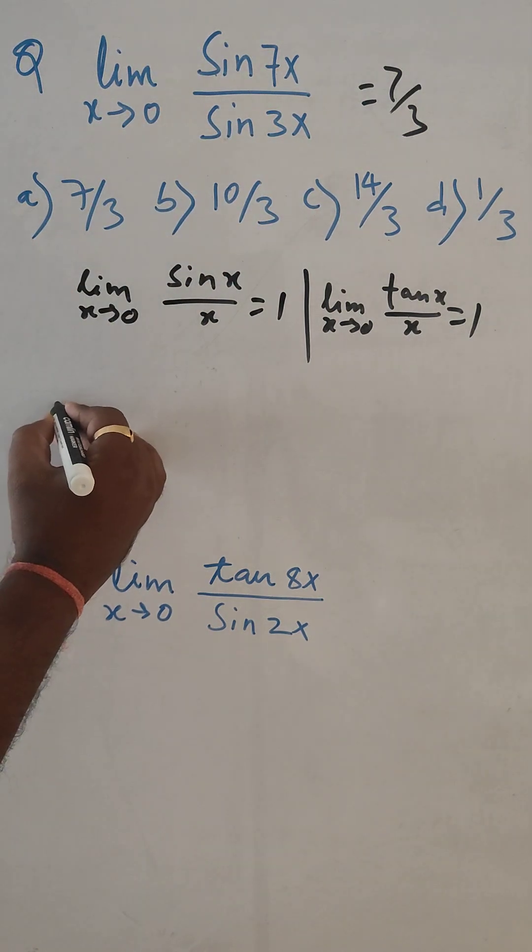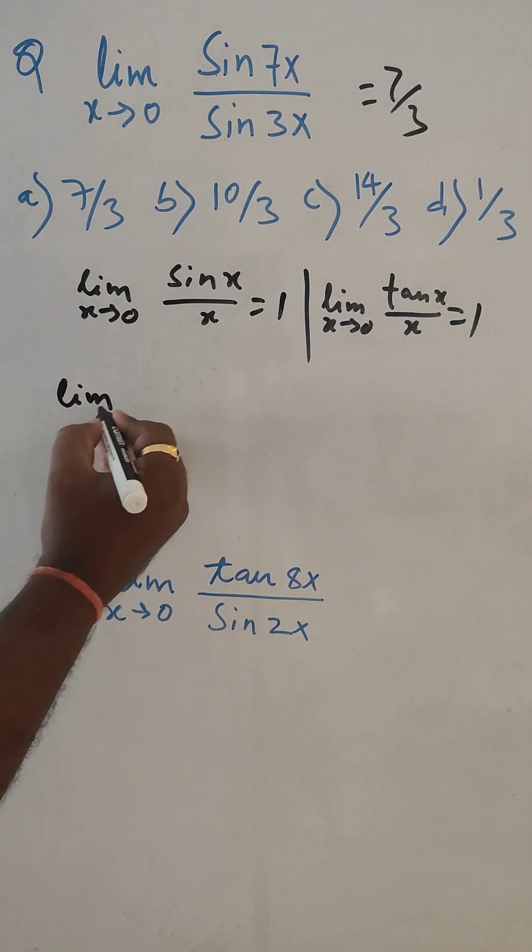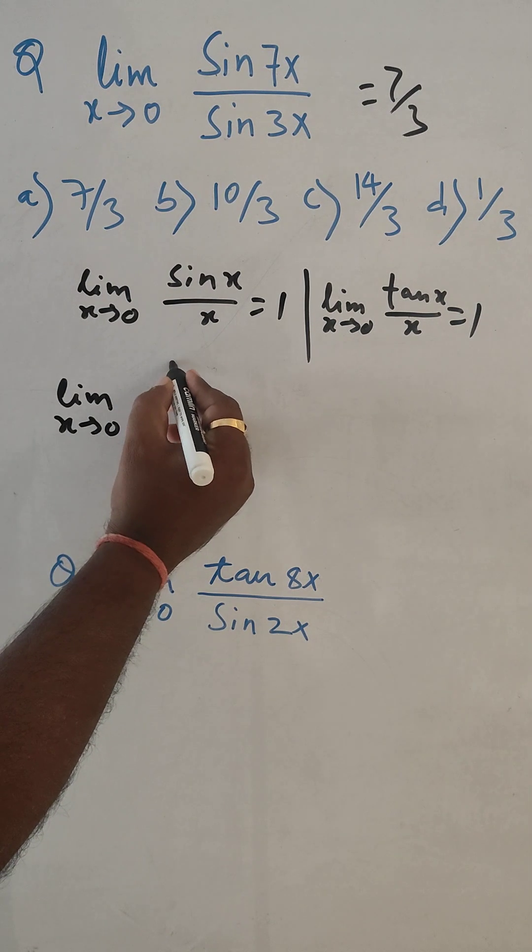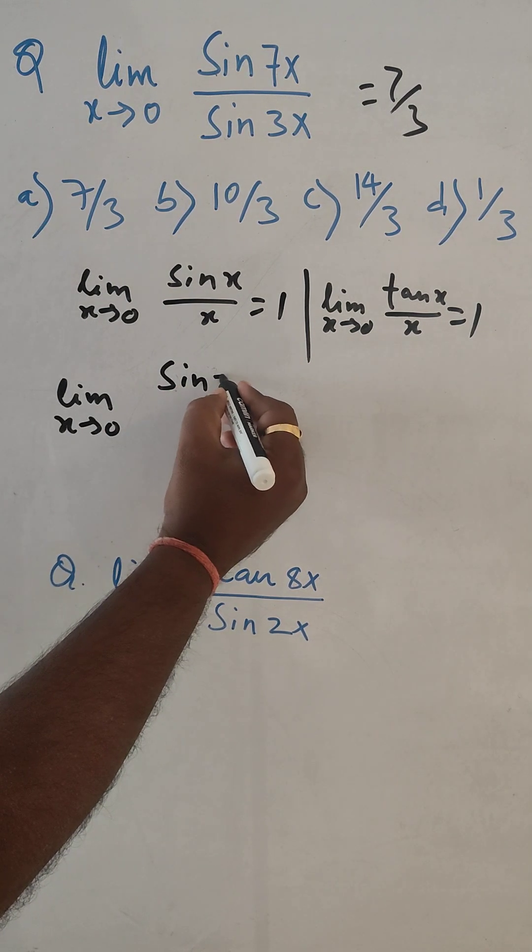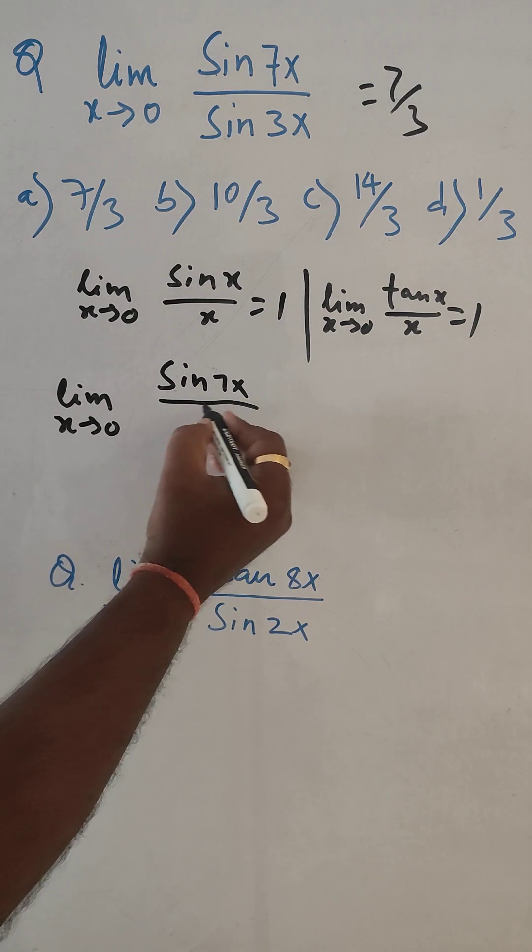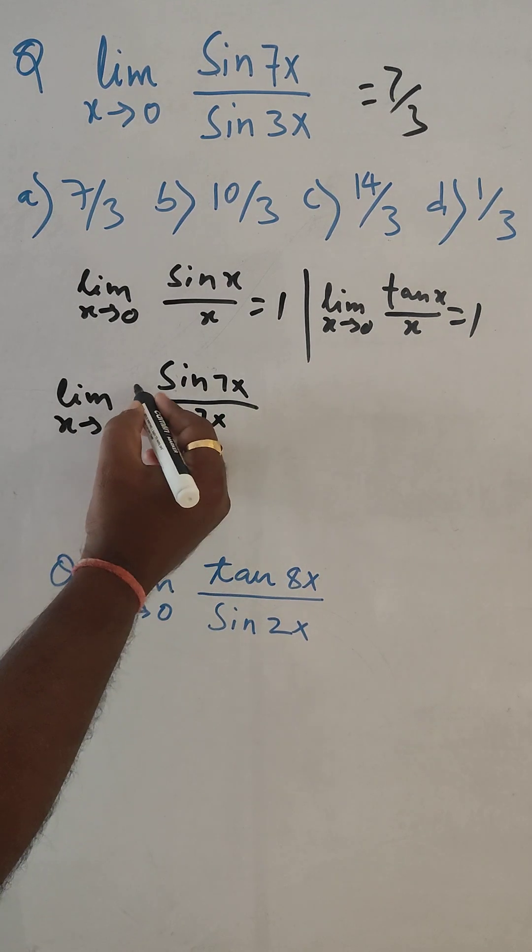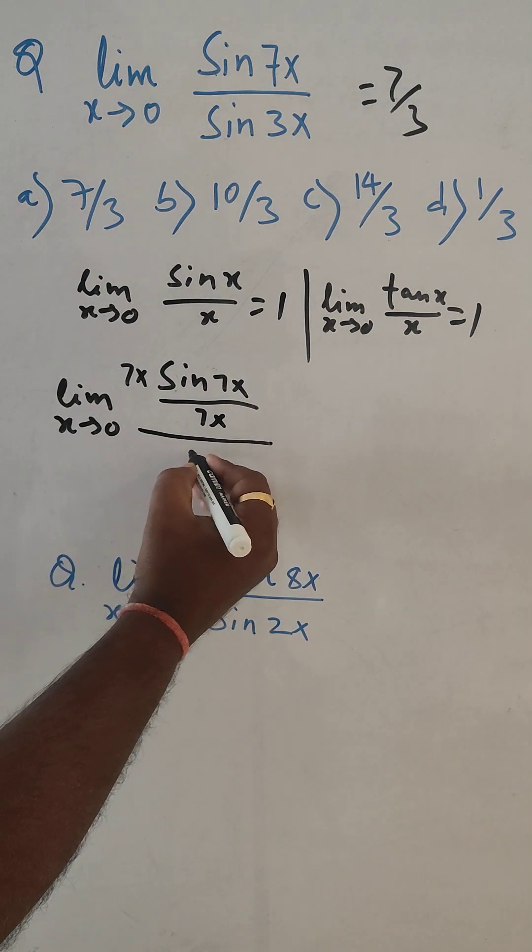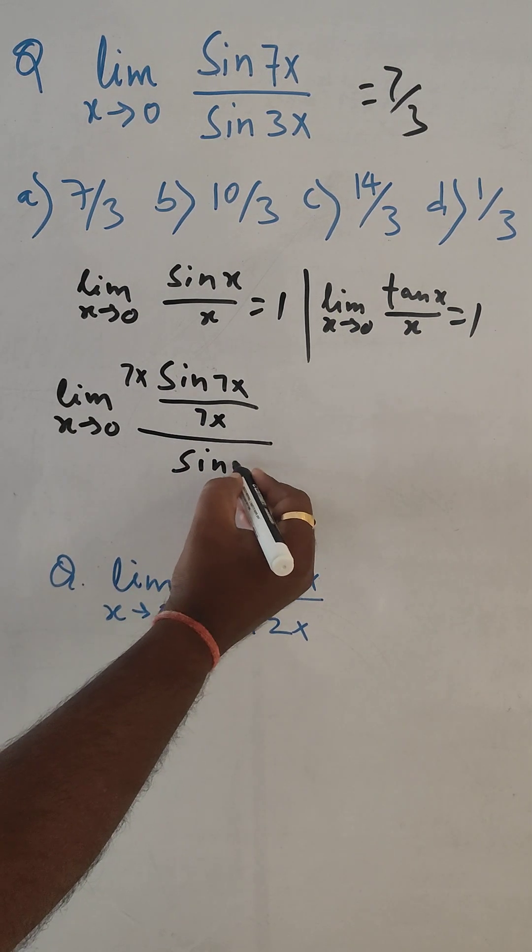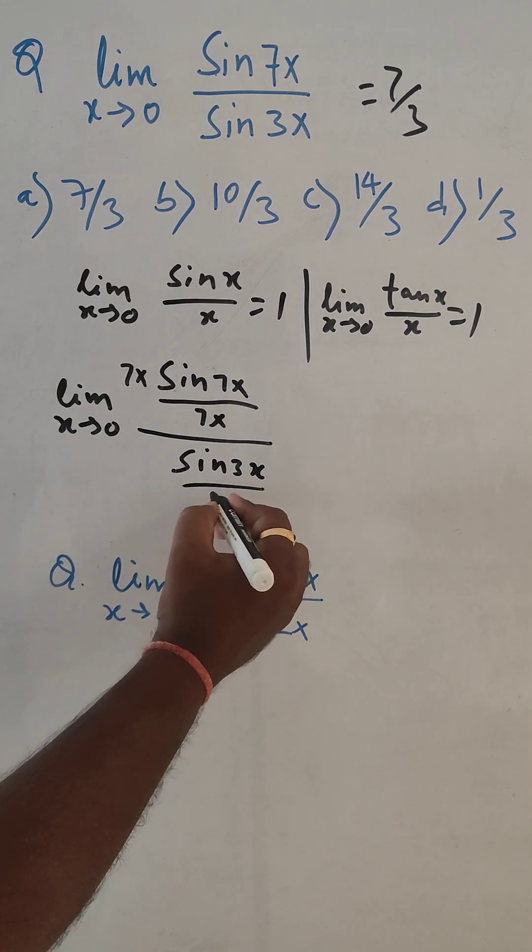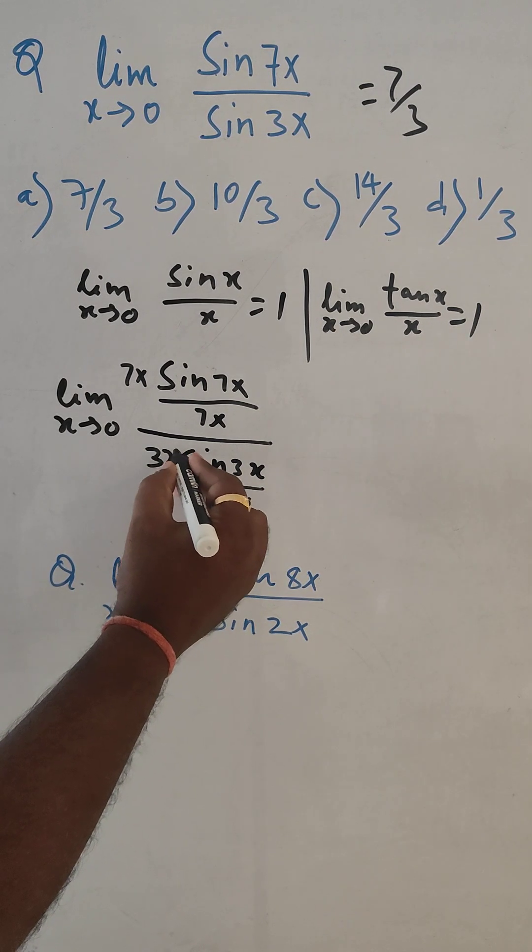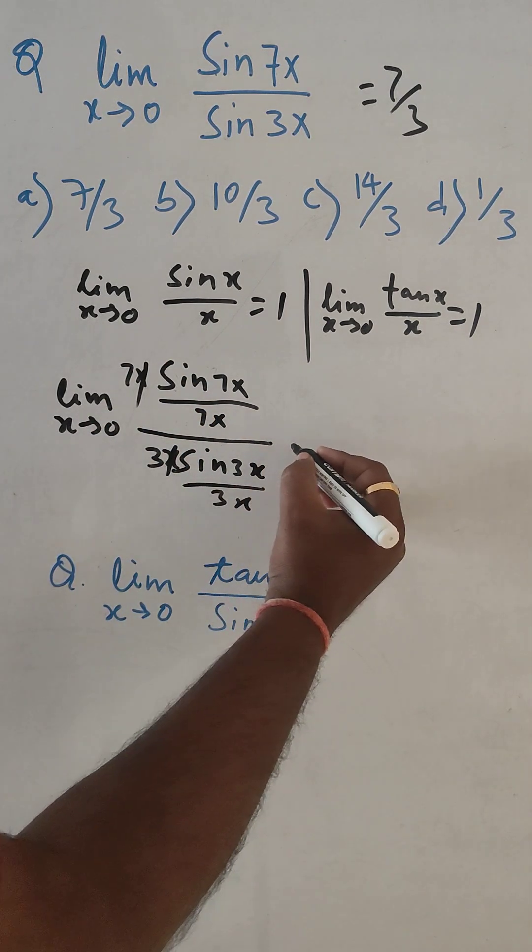So here if you see this question, limit x tends to 0, sin 7x. We can divide by 7x, here 7x multiply. Here again we can write sin 3x, here 3x, and here 3x. This x, x got cancelled.